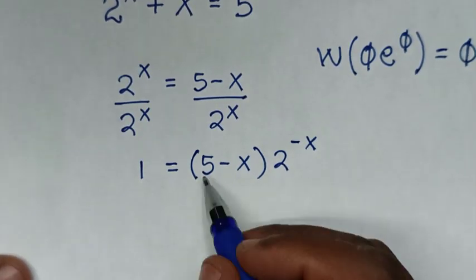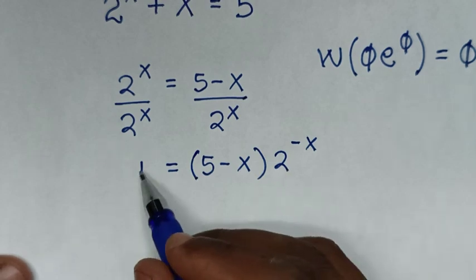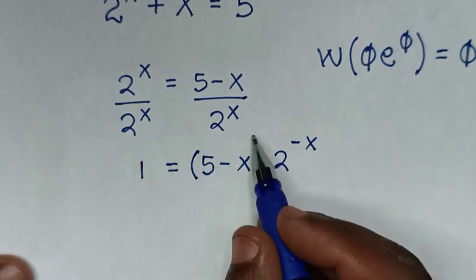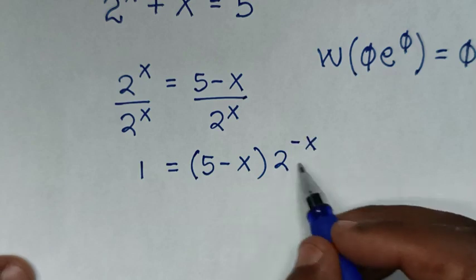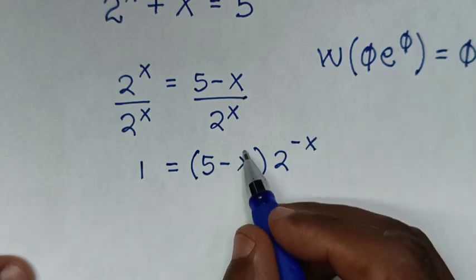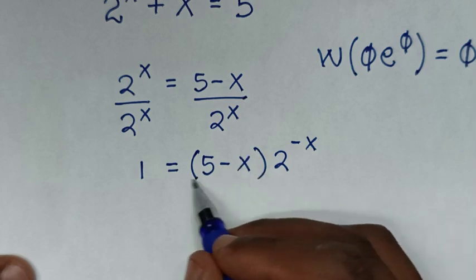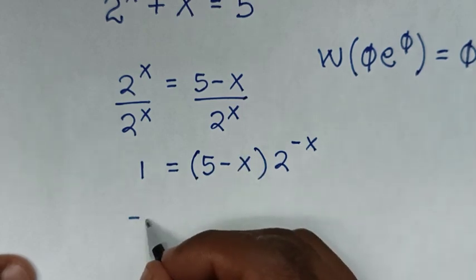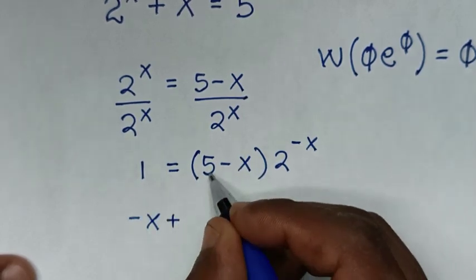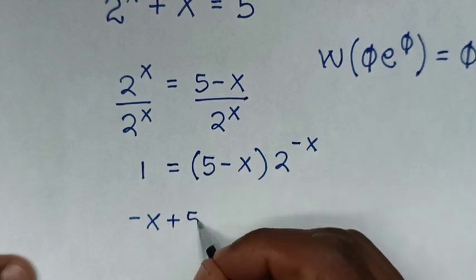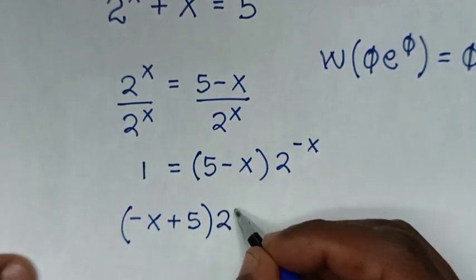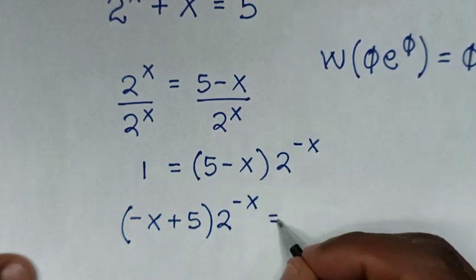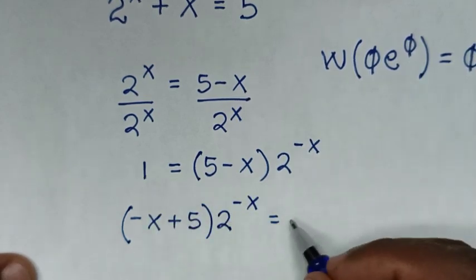Rearranging, we bring the terms together. In the bracket we have negative x plus 5, and this is multiplied by 2 to the power of negative x, which equals 1.